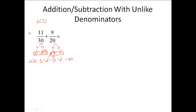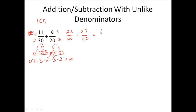Now I can change those denominators to 60. I need to take the first fraction times 2 over 2, and the second fraction times 3 over 3. Now that I've got the same denominators, I can go ahead and add them, and I end up with 49 over 60.